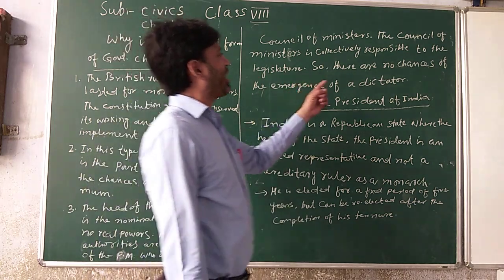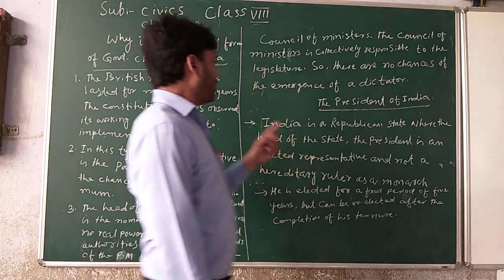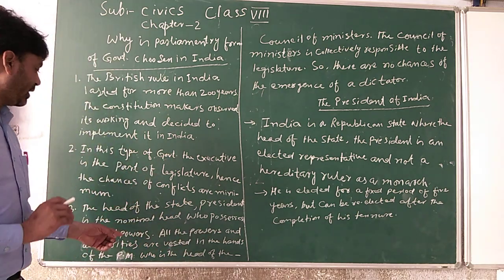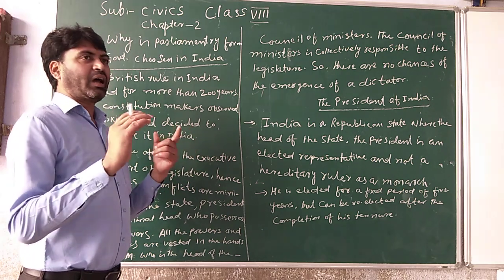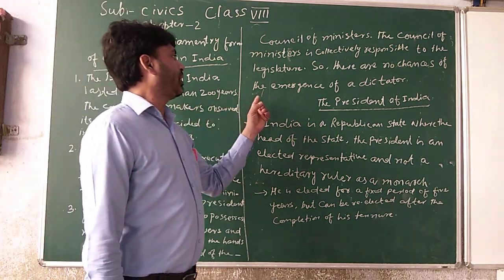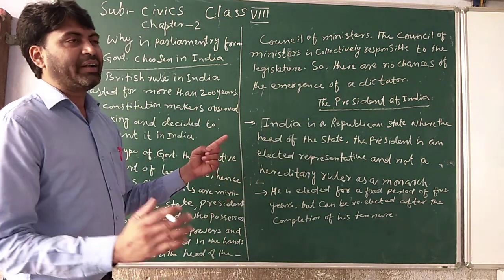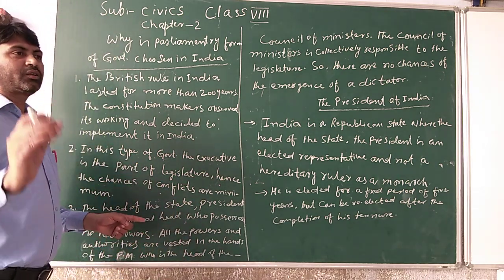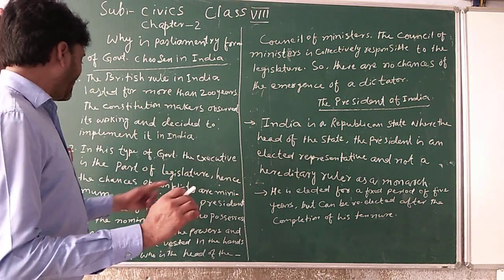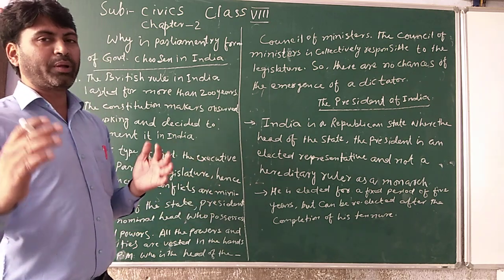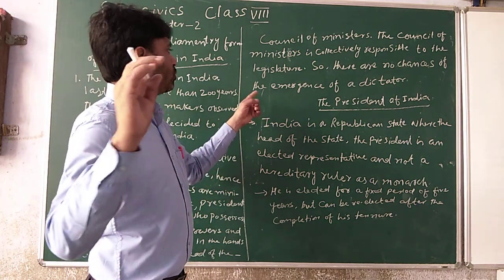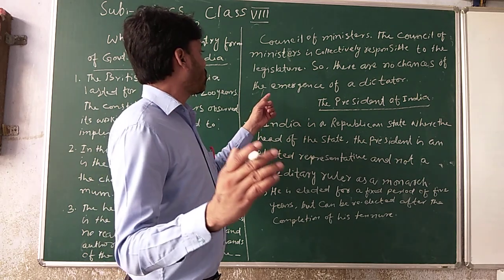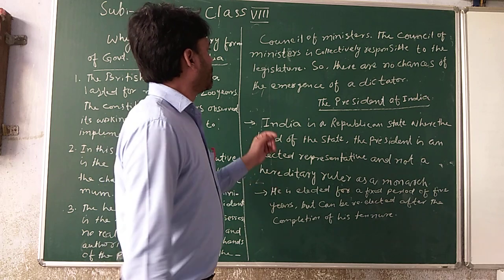So there are no chances of the emergence of one-man rule. The president is the nominal head, and the real head is the Prime Minister. The Prime Minister is a member of parliament, and ministers have power. These people are responsible for their actions to the legislature.